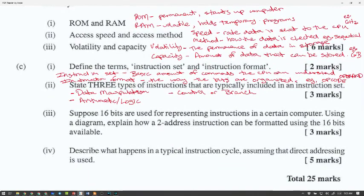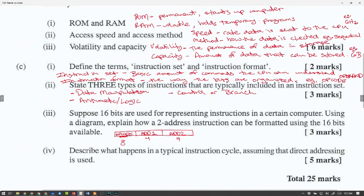Suppose 16 bits are used for representing instructions in a certain computer using a diagram. Explain how a two-addressed instruction can be formatted using the 16 bits. What you want to do is you want to break it up into three sets because it's two-addressing. So, the first bit will be 8 and this is the opcode and this is address one and address two. So, basically, it's saying first 8 is opcode and next 4 is address one, next 4 address two.